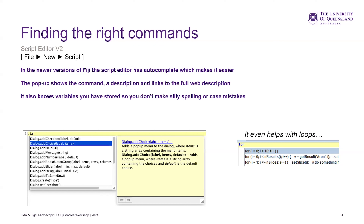One other nice thing in the latest versions is if you define a variable, it'll know and populate autocomplete with that variable you've defined. So you don't have silly spelling mistakes where you're going, why does this not work? You look at them, they both look the same, but someone had zero instead of the letter O. That's not obvious. So the autocomplete for variables is really nice.